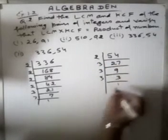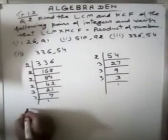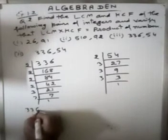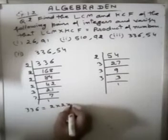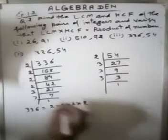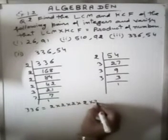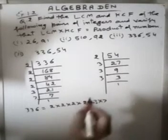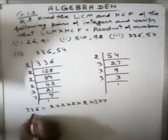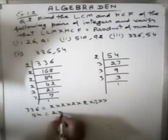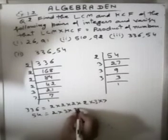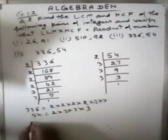Now, prime factorization of 336 is equal to 2 × 2 × 2 × 2 × 3 × 7, and prime factorization of 54 is equal to 2 × 3 × 3 × 3.